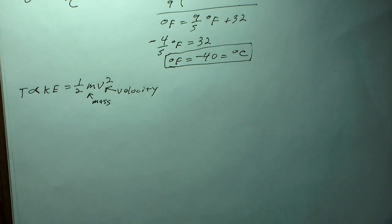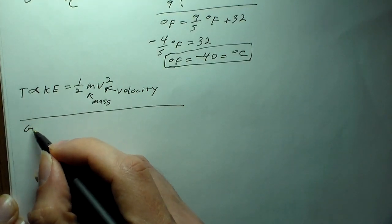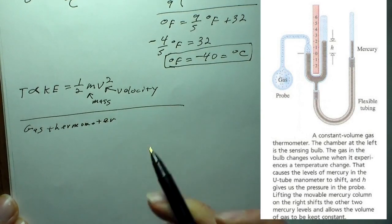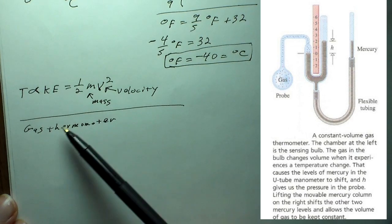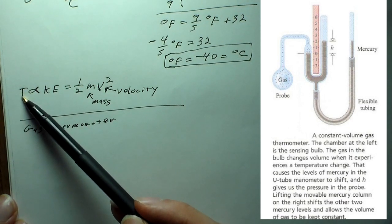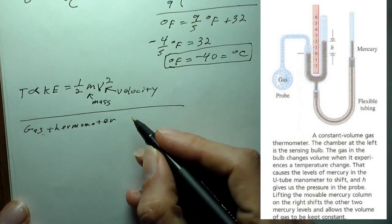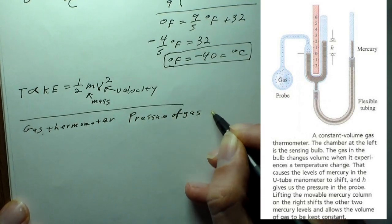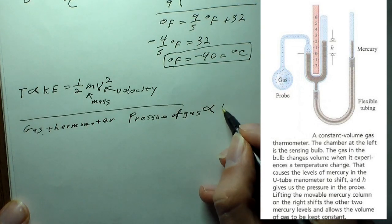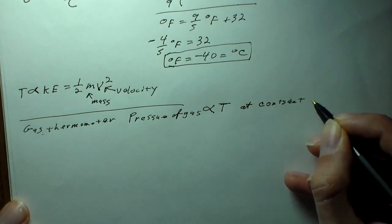There are a couple of different methods for actually determining what the temperature is, because it's very difficult to measure the velocities of all your gas particles. The first way they did this was using a gas thermometer. The pressure of the gas is proportional to the temperature of the gas when you're dealing with constant volume.